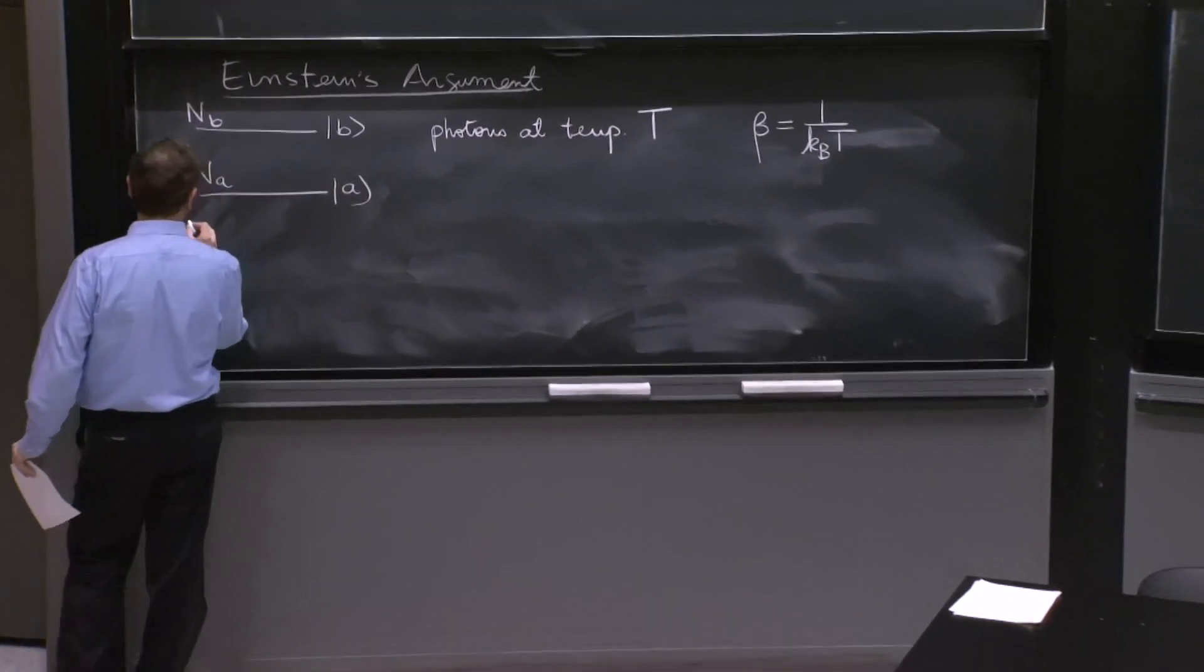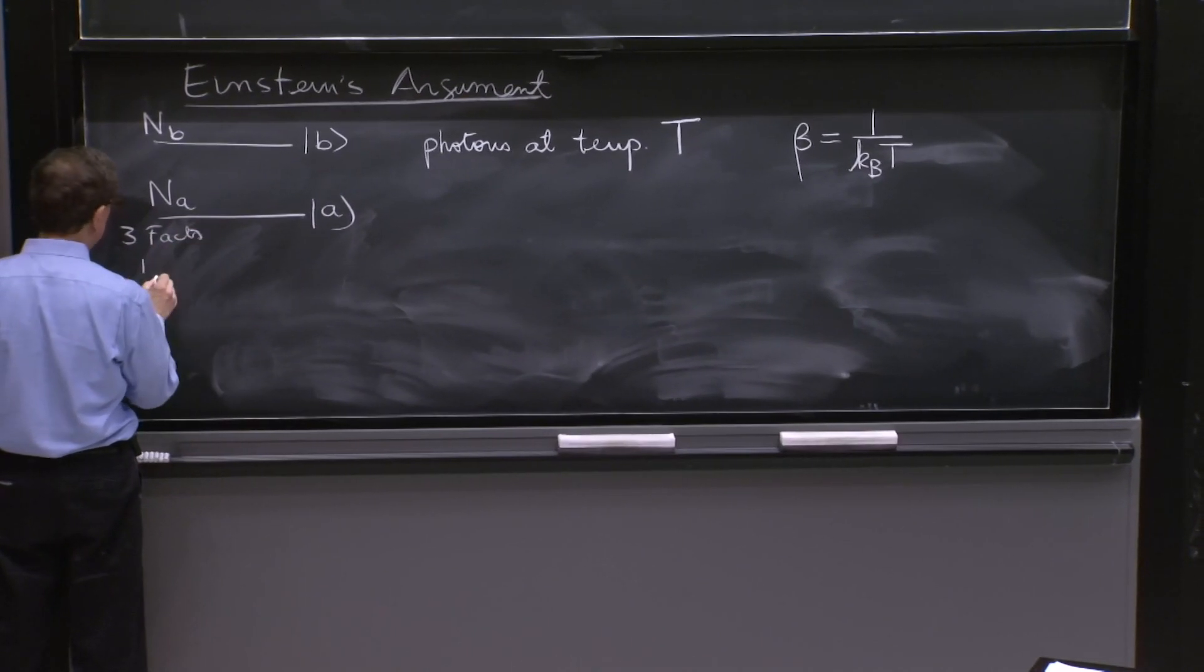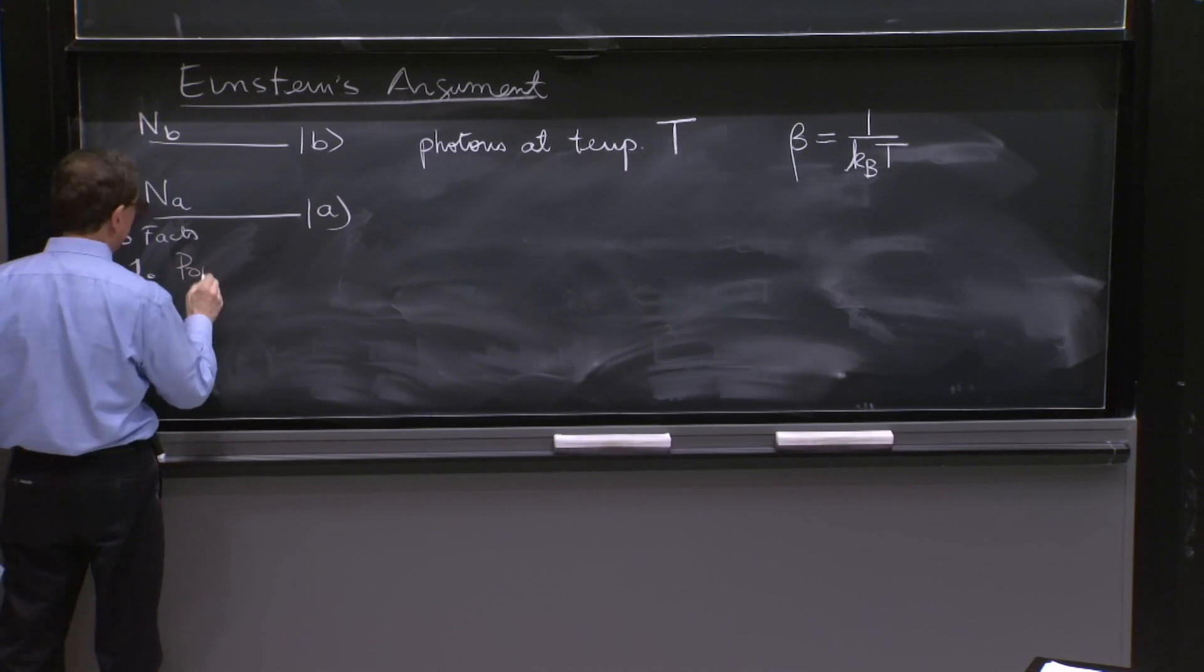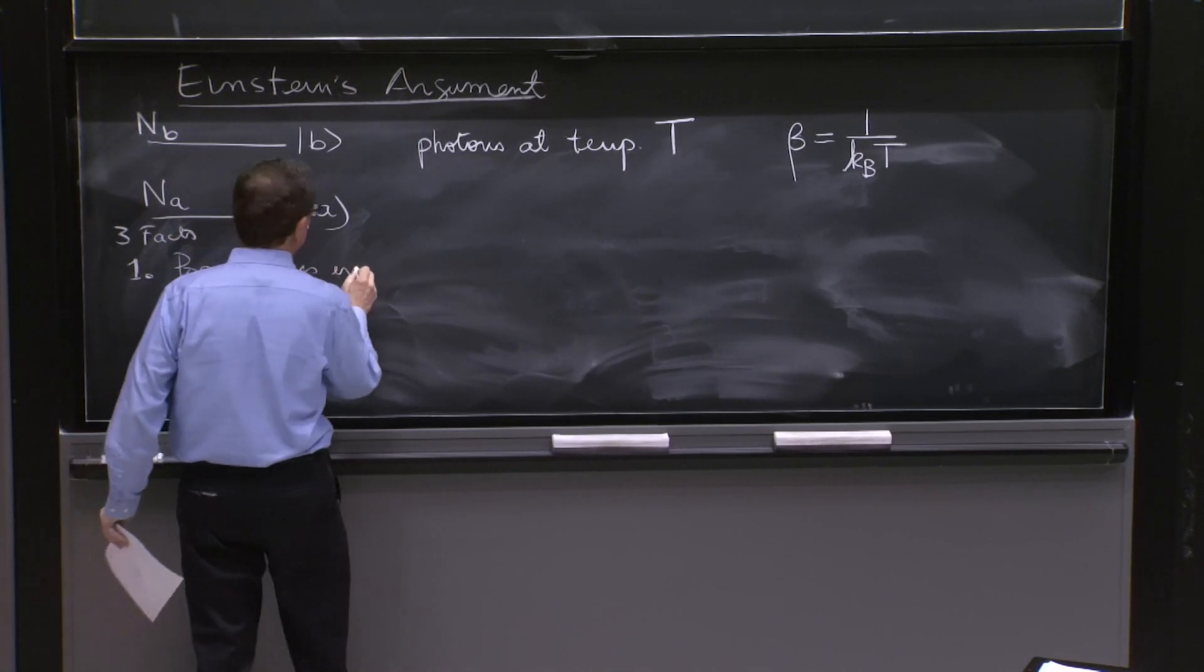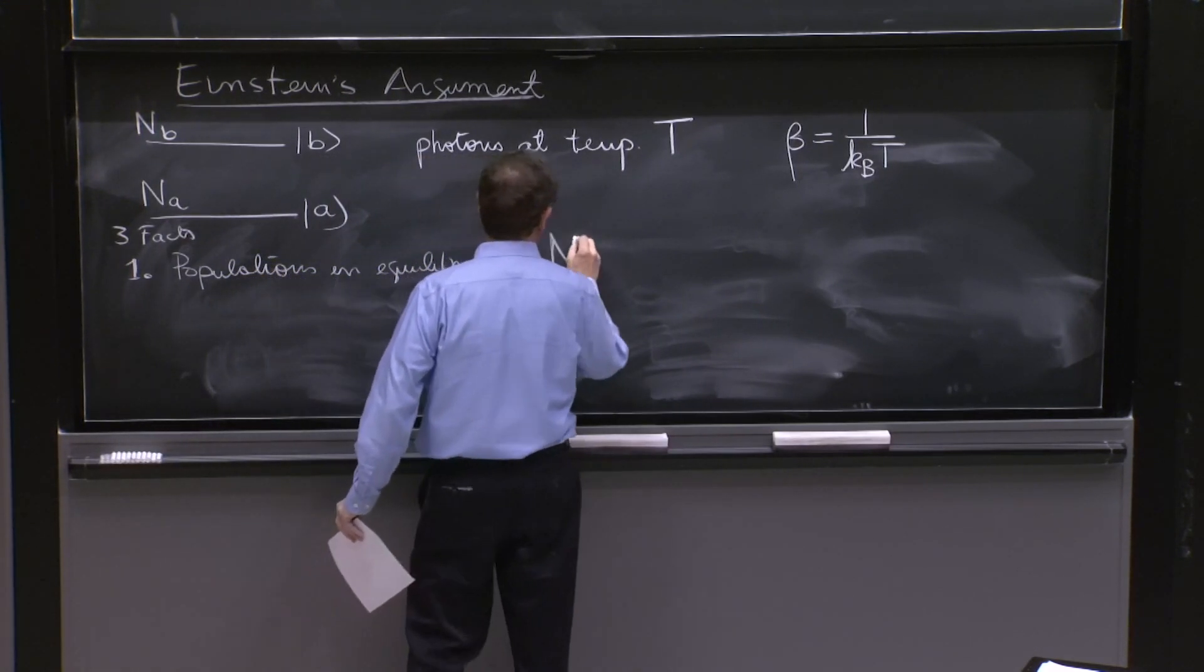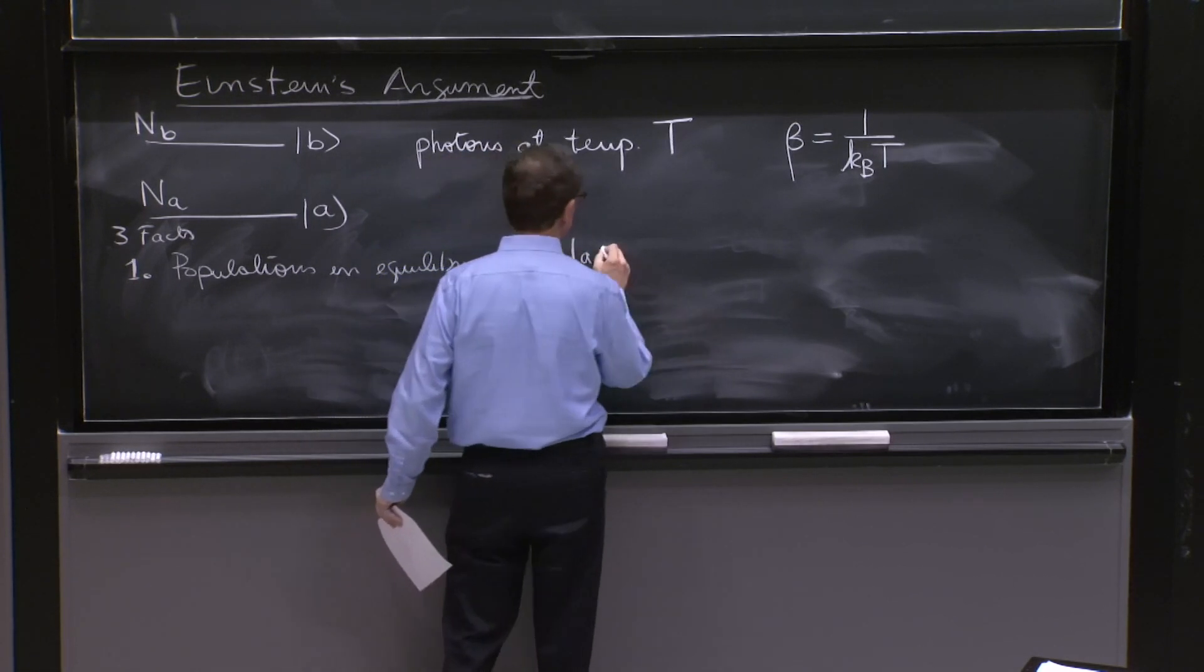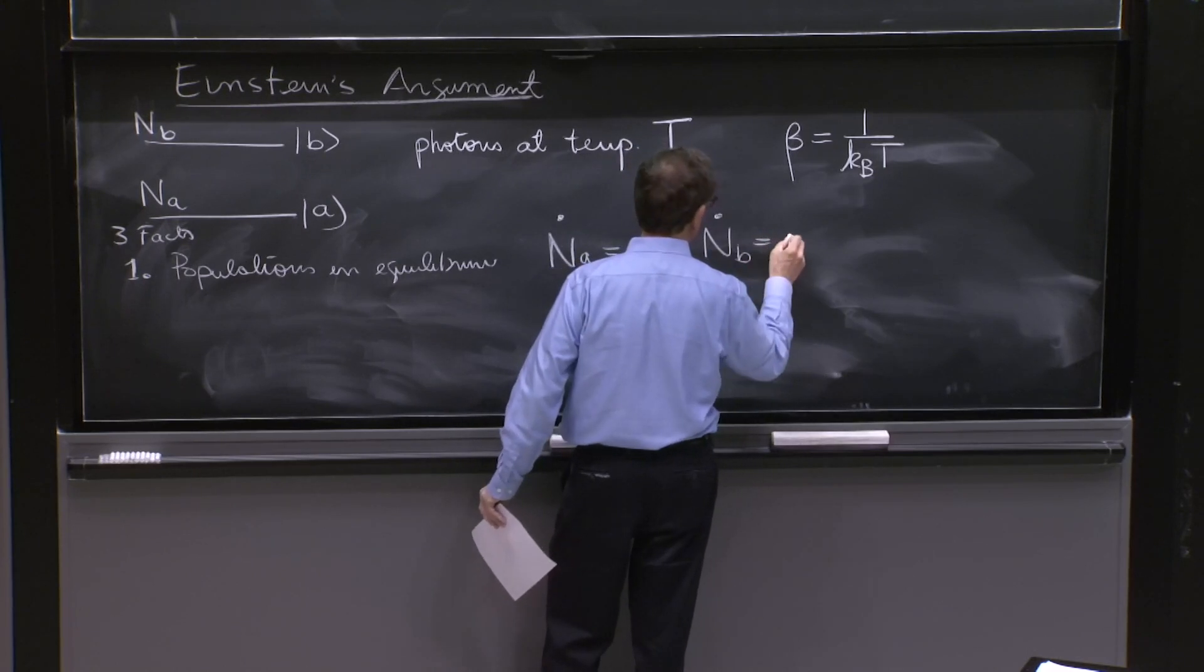So we're going to use here three facts. One is the populations are in equilibrium. So Na dot, they stop changing, is equal to 0, and Nb dot is equal to 0.